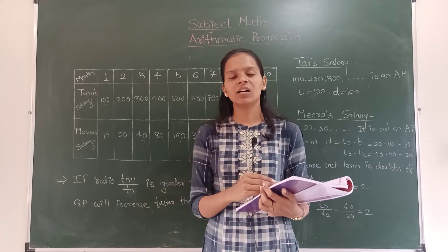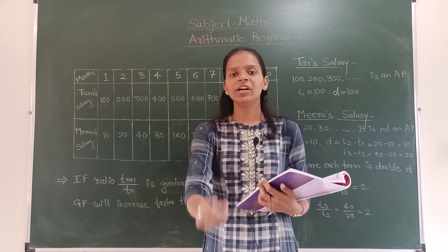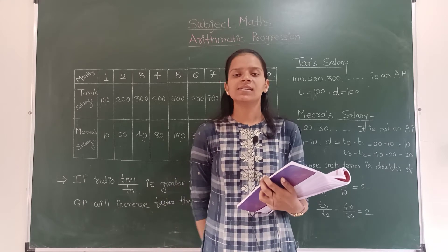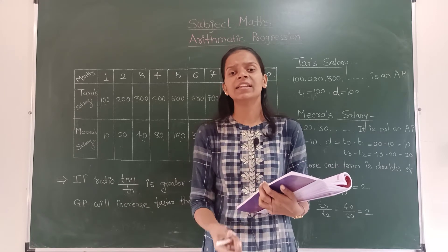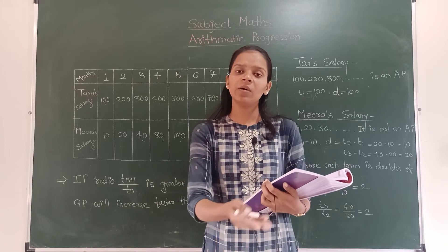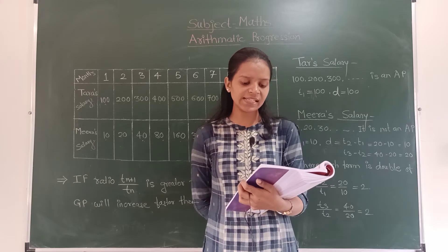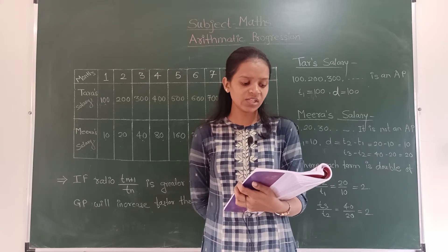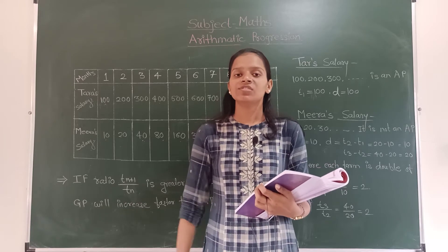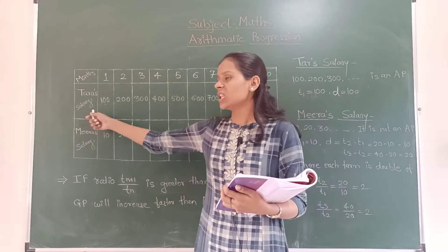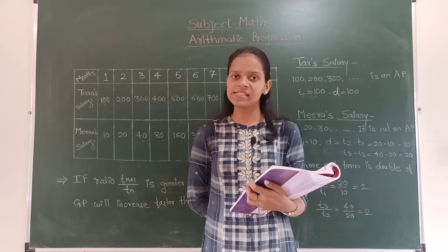Meera said: give me just 10 gold coins in the first month, and every month double this amount. So in the first month salary will be 10 gold coins, second month 20, third month 40. After three months, Yashwantaraja said to his sister: my teacher is smarter than yours as she asked for more money.